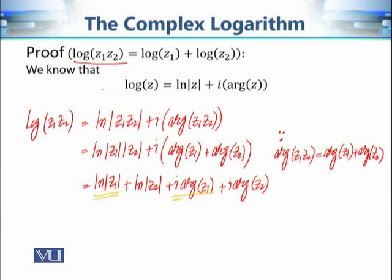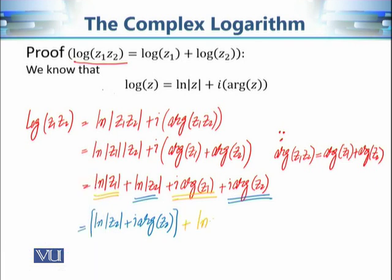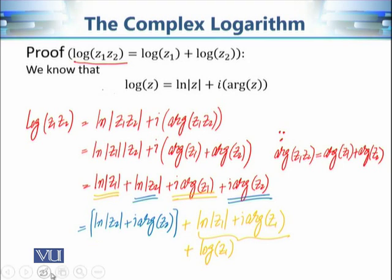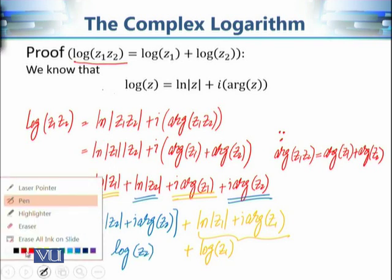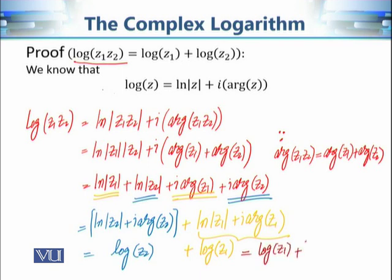Since |z1| and |z2| are real numbers, we can write this as log|z1| + log|z2| + i·arg(z1) + i·arg(z2). Combining terms — log|z1| + i·arg(z1) with log|z2| + i·arg(z2) — we get log(z1) + log(z2). That completes the proof of this property using the definition.